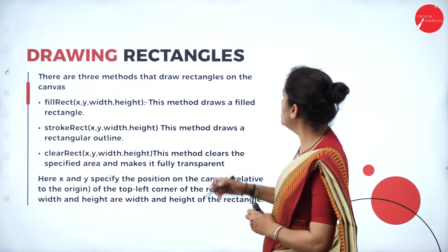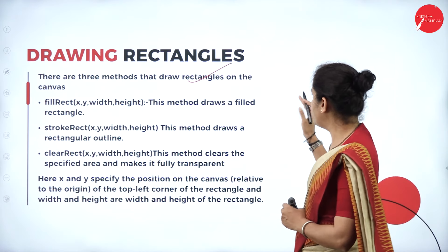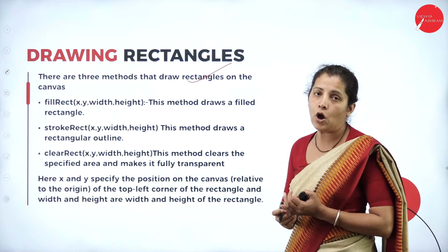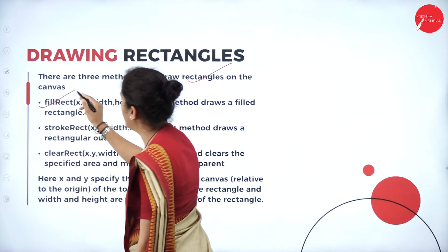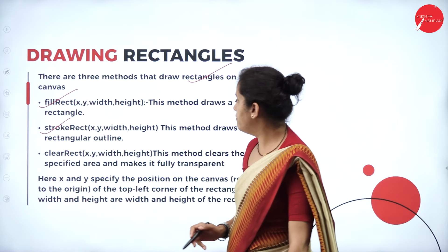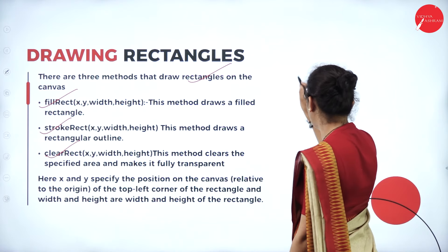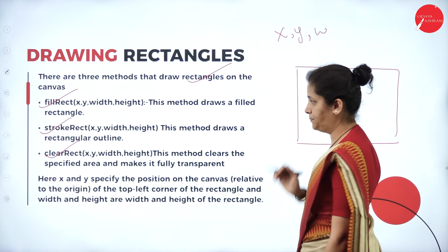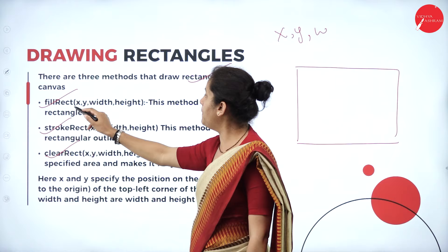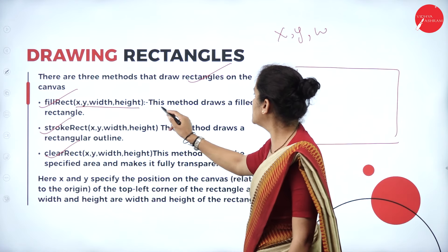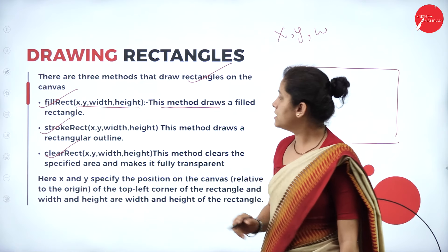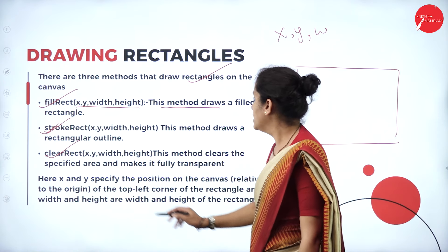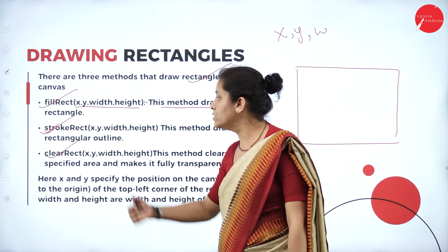There are three methods that draw a rectangle on the canvas. First is fillRect, which draws a filled rectangle. Second is strokeRect — if I want a regular rectangle outline, I'll use strokeRect. Third is clearRect — if I want to clear the rectangle area, I use clearRect. This method clears the specified area and makes it fully transparent.